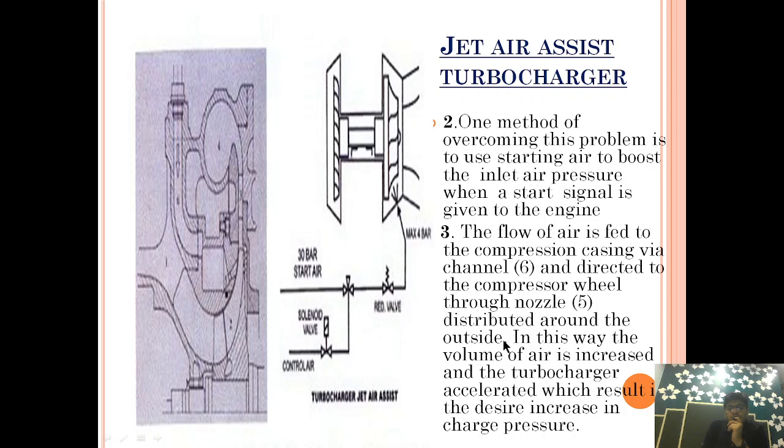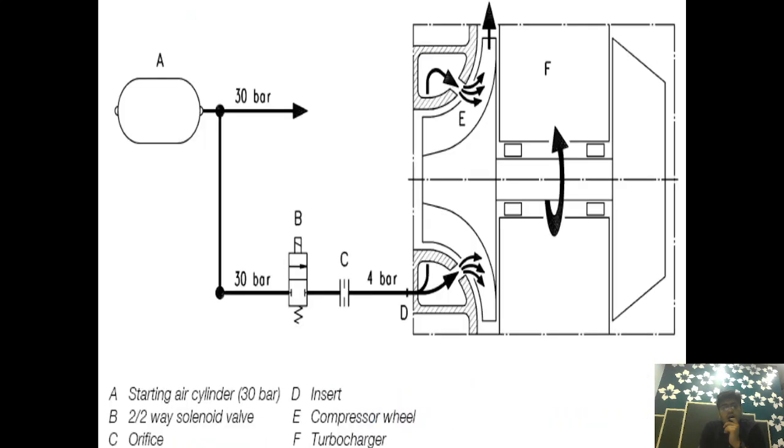In this way, the volume of air is increased and the turbocharger accelerated, resulting in the desired increase in charge pressure. If anybody asks how jet assist helps overcome poor combustion and black smoke generation, both are correlated.